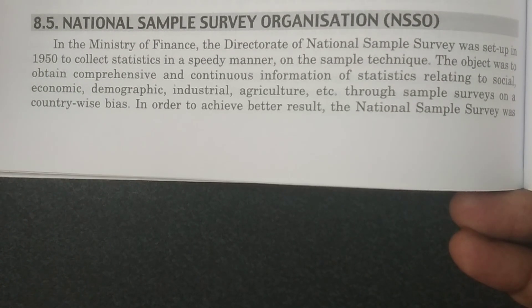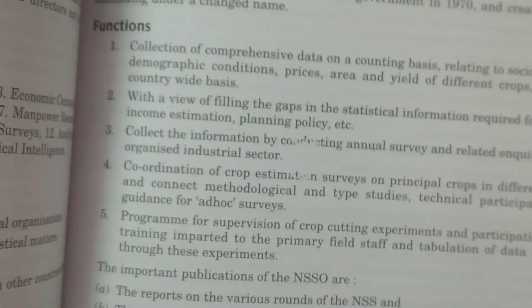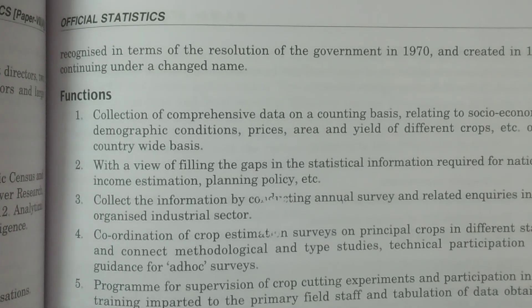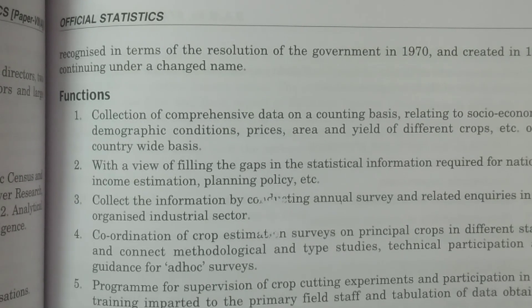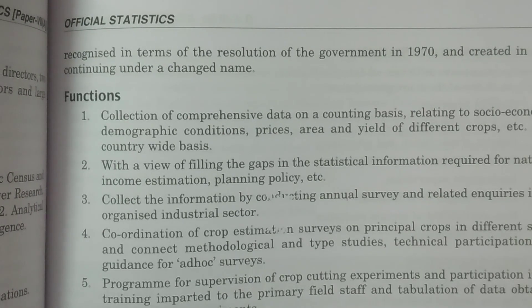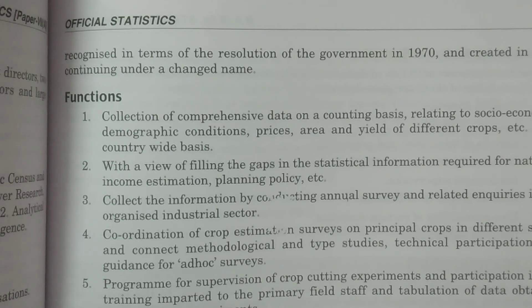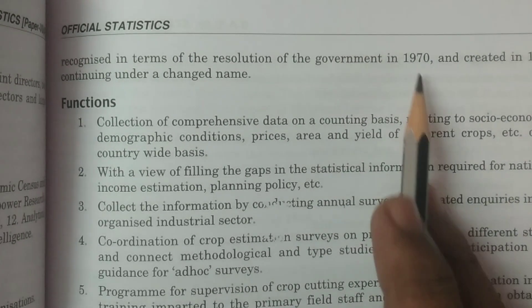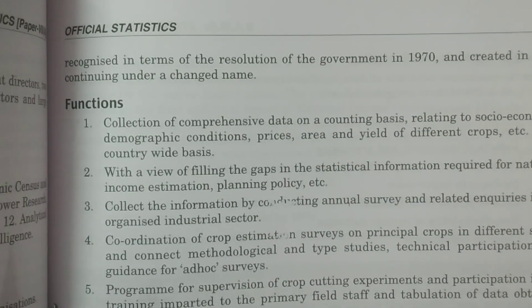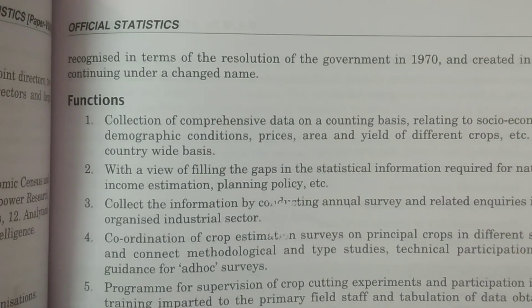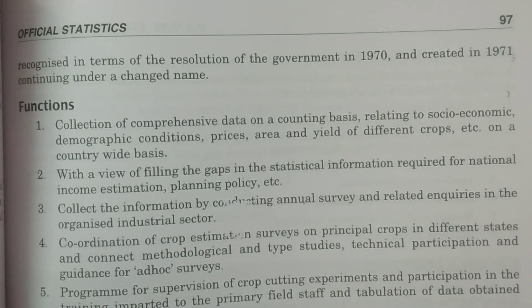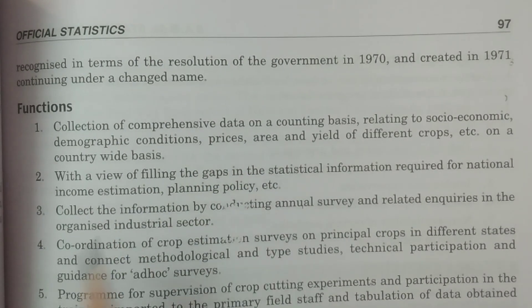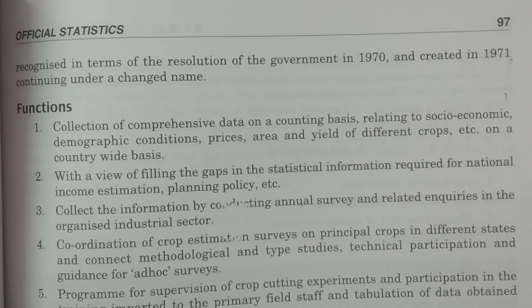The National Sample Survey Organization was mainly reorganized in 1970. The name was changed to National Sample Survey and it was recognized as National Sample Survey in 1970, and in 1971 it was fully set up as the National Sample Survey Organization. This is the history of how NSSO was set up in our country. One of its functions is the collection of comprehensive data.